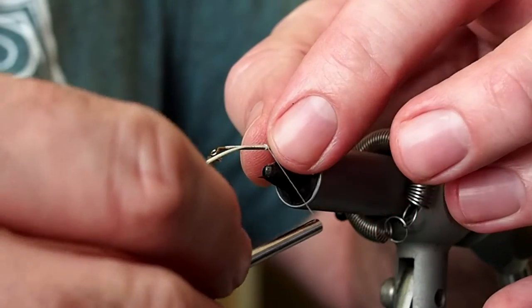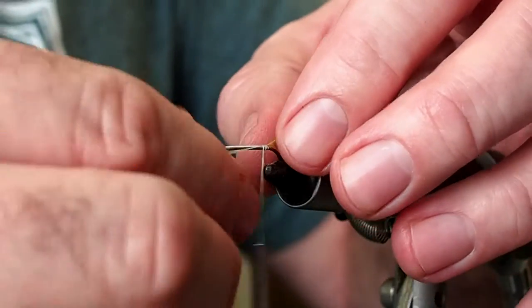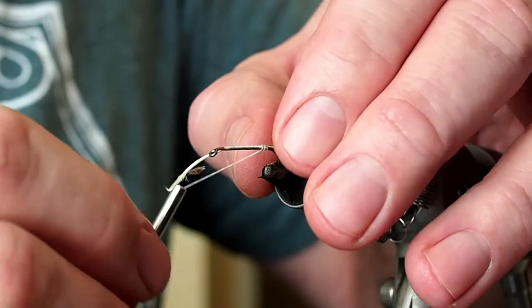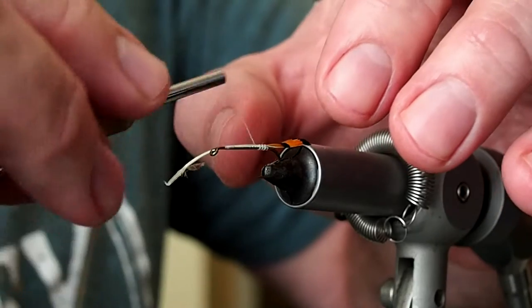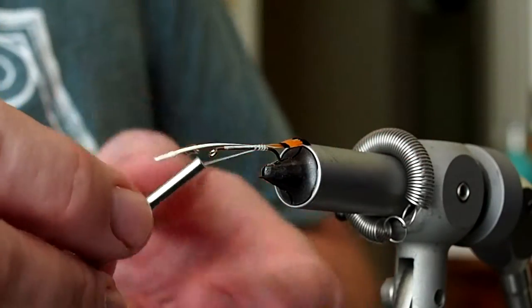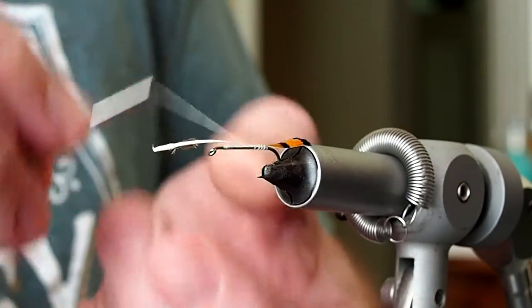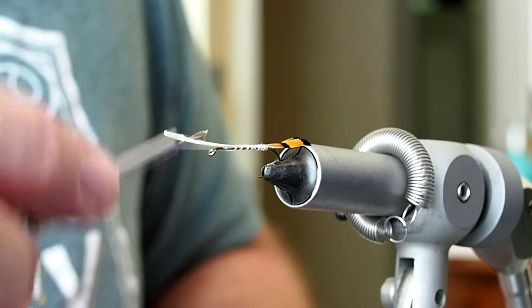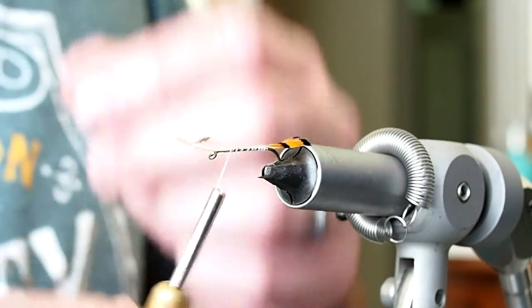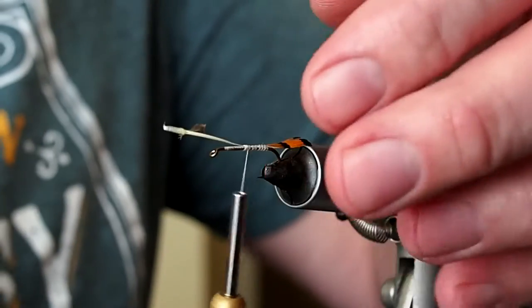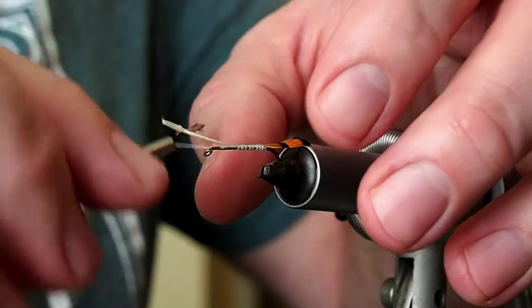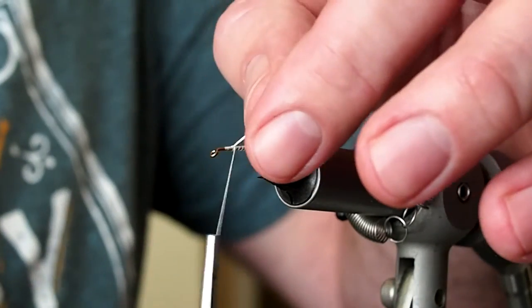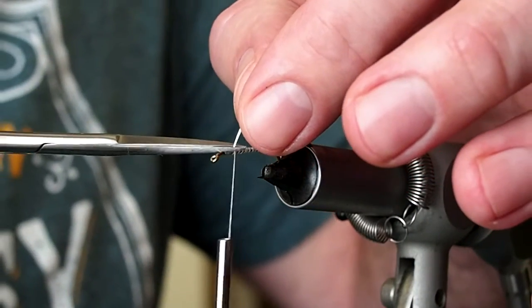Because it has a tendency to roll, I like to just allow the stem to lay where it wants to naturally and then advance using some loose wraps up the shank of the hook, back up to your starting point. And then trim that excess stem.